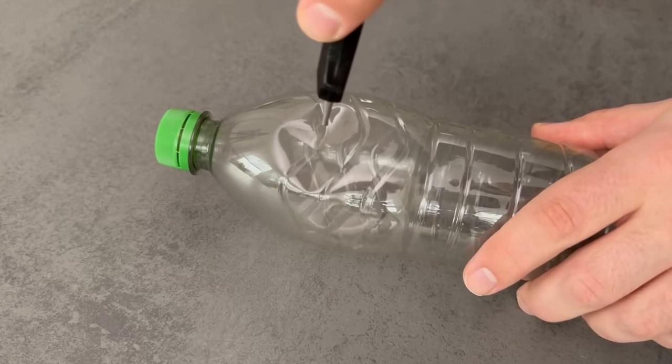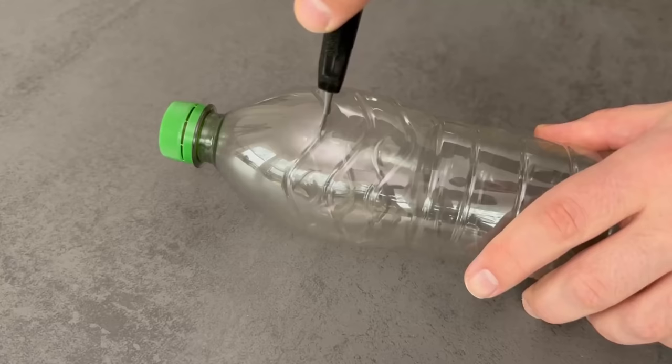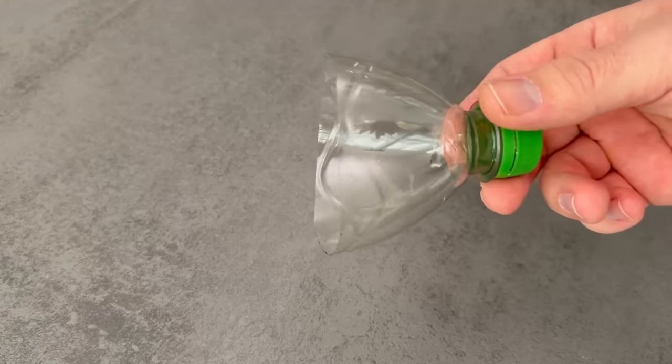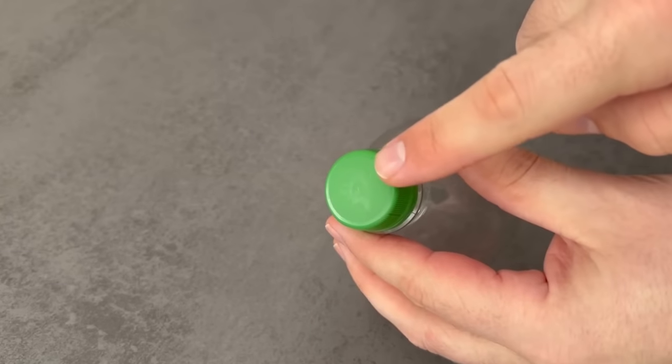You need a PET bottle like this and should now cut off the neck of the bottle. It's best to do this carefully with a cutter knife until you have a piece like this.